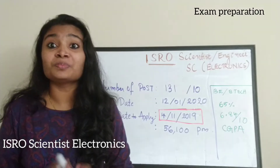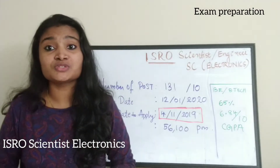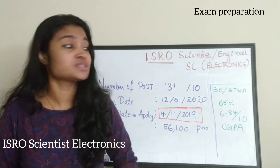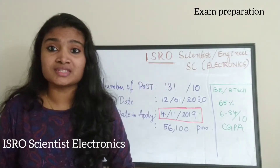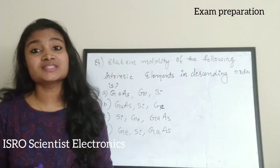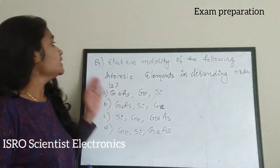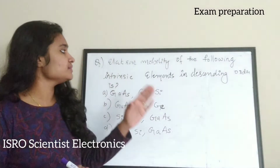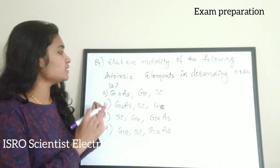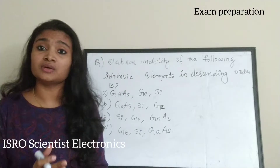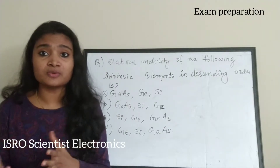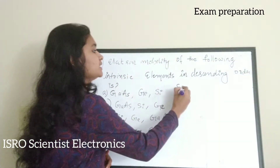Please don't forget to apply for this post. From today we'll be doing videos for the preparation of this exam, that is ISRO Scientist/Engineer for the electronics post. Today we are going to see some of the previous questions asked in ISRO exams for the electronics branch. The first question is about electron mobility of intrinsic elements in descending order. This question is basically from semiconductor theory.